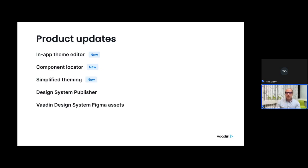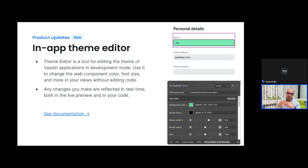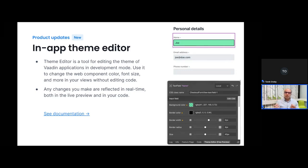The theme editor is a new low-code tool introduced with 24.1, which is released today. This tool allows you to edit the theme of a Vaadin application without actually having to write CSS code. It is integrated in the developer tools found in the lower right corner when developing a Vaadin Flow application, and you can use it to change the look and feel — selecting a component, changing its color, font size, and much more.